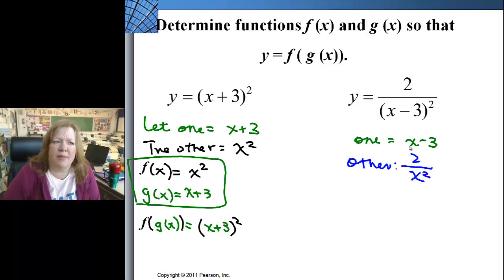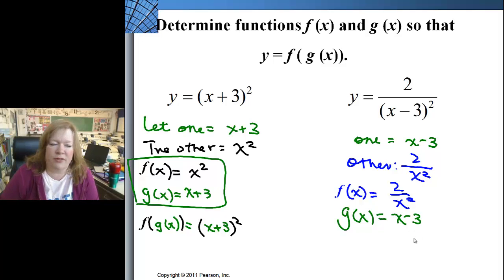So if I look at this one, I'm going to let one equal x minus 3 and the other one be 2 over x squared, because I just have to put this simple one in for x on the other one. f of x is going to be your 2 over x squared because this guy is going inside the other one. So he's the first guy, and then your g of x is going to be x minus 3, and that's it for this problem. Let's do another example.